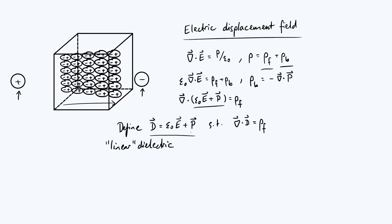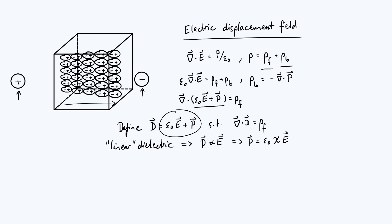The defining equation for D takes on a particularly simple form for a linear dielectric — one where the polarization responds linearly to the applied electric field, i.e., P is proportional to E. Conventionally we write this as P = ε₀χE, where χ is called the electric susceptibility. You can tell χ is dimensionless because P and ε₀E are added together in the definition of D, meaning they have the same units, and so for P = ε₀χE to be dimensionally consistent, χ must be dimensionless.